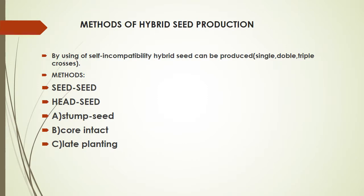Coming to methods of hybrid seed production. By using self-incompatibility, hybrid seeds can be produced by: seed-to-seed method, head-to-seed method. In head-to-seed method: stump seed, core intact, and late planting.